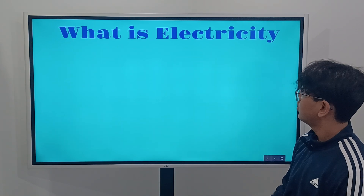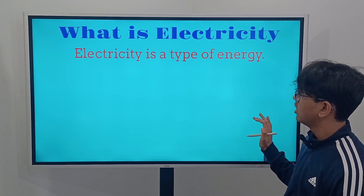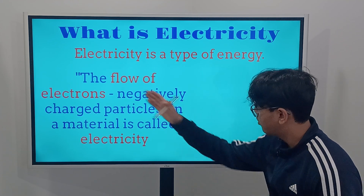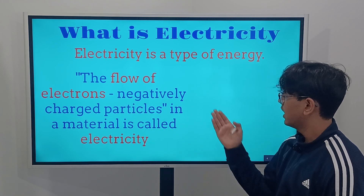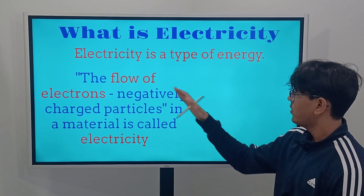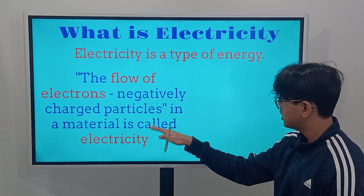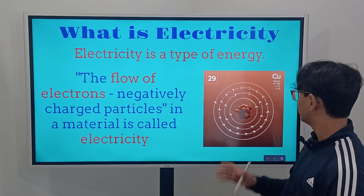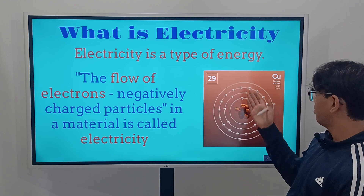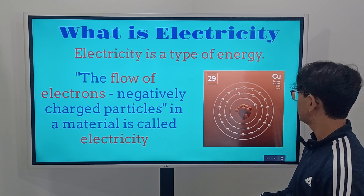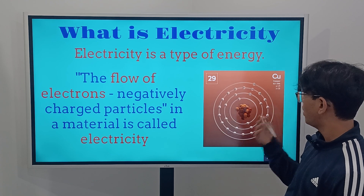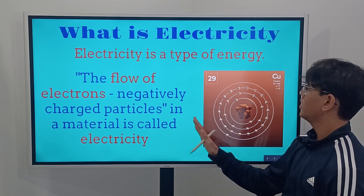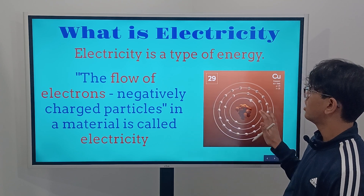Now we're going to cover further on what electricity is. Electricity is a type of energy — basically, it is the flow of electrons, and electrons are negatively charged particles. When electrons flow inside of a material, we call it electricity. Here's an example using the element copper: when we look at its atomic model, we can see electrons flowing around it.